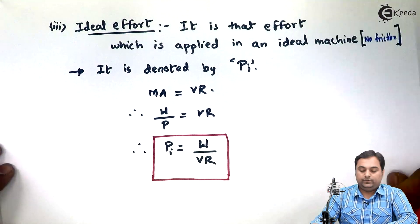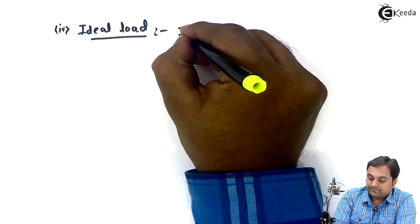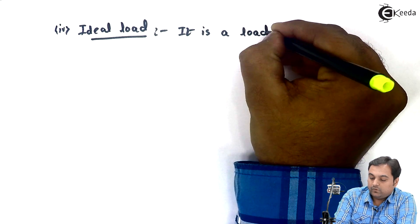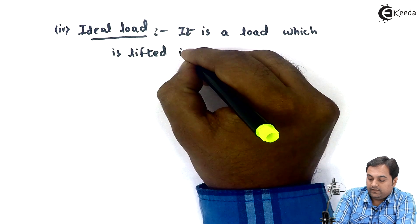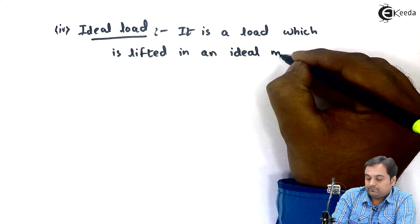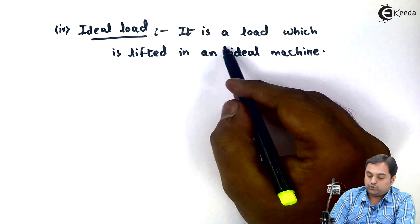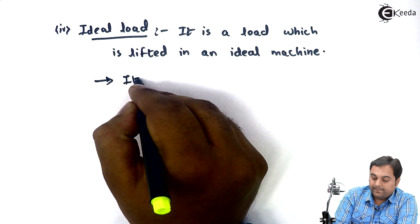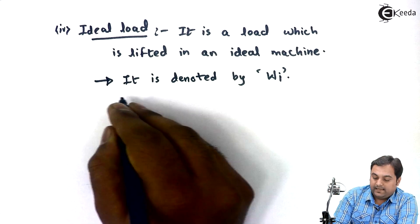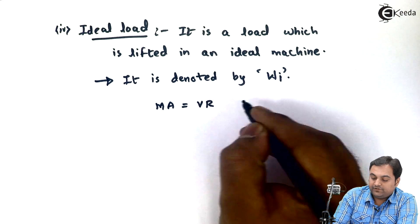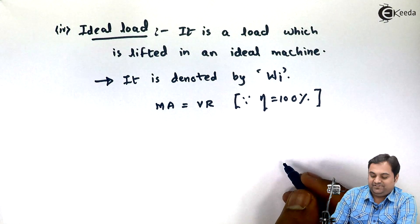Next is ideal load. Ideal load is a load which is lifted in an ideal machine — a machine in which friction is absent. Ideal load is denoted by W with suffix i. Again, we use the relation: mechanical advantage equals velocity ratio, since efficiency is 100% for an ideal machine.